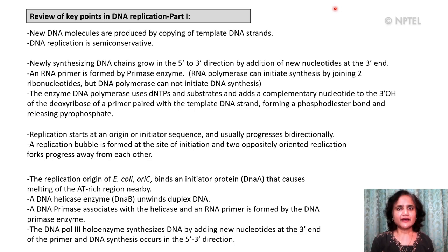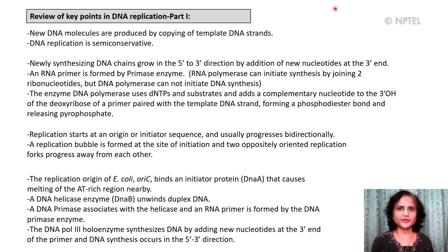Forming a phosphodiester bond and releasing a pyrophosphate in this process. Replication usually starts at an origin or initiator sequence and progresses bi-directionally. A replication bubble is formed at the site of initiation and the two oppositely oriented replication forks progress away from each other. In E. coli, the replication origin binds an initiator protein, DNA A, that causes melting of the AT-rich region nearby.